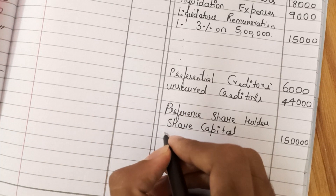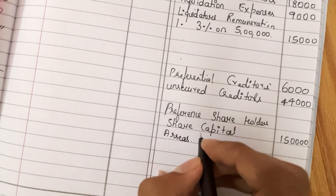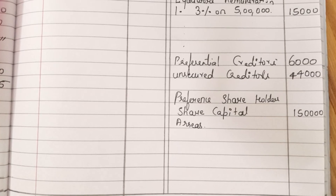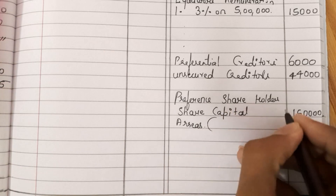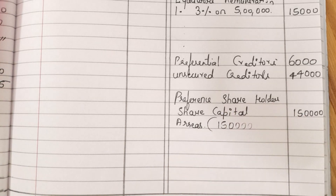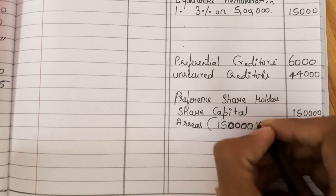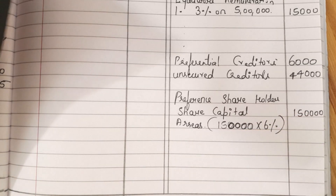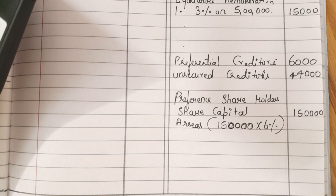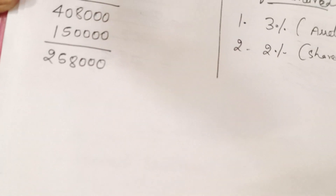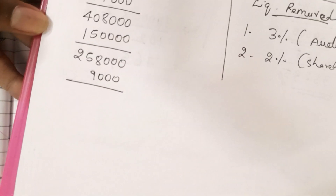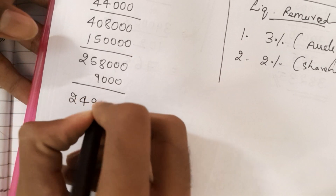Now there are arrears to pay. How do we calculate arrears? The total preference share capital is 1,50,000. They are 6% preference shares, so they should get 6% dividend. The dividend was paid only up to 31st March 2021, but now we are at 2022 — so one year's interest we have to pay: 1,50,000 × 6% = 9,000. The arrears are 9,000. So 2,58,000 minus 9,000 equals 2,49,000.